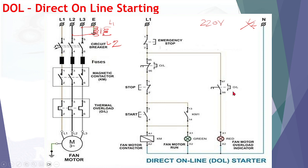This is the basic idea of the DOL starter — there is no voltage reduction, only direct power supply with protection devices. When you want to stop, simply press the stop button; power is cut from the KM1 contactor and the latching contact opens, stopping the motor. The main disadvantage is it draws high starting current, though the advantage is high starting torque. For large motors, DOL is not suitable because it heavily affects voltage dip and power factor.